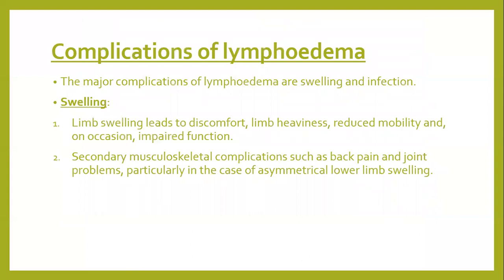The complications of lymphedema: major complications are swelling and infection. Limb swelling leads to discomfort, limb heaviness, reduced mobility, and occasionally impaired function. Secondary musculoskeletal complications such as back pain and joint problems are seen particularly in cases of asymmetrical lower limb swelling. Lymphedema causes heaviness of the limb, reducing mobility and indirectly affecting the joints.